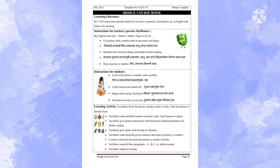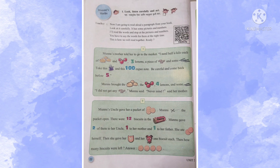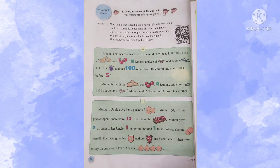In this topic, we are going to learn how to read aloud a paragraph from your book. Look at it carefully — it has some pictures and numbers. I shall read the words and stop at the pictures and numbers; you have to say the words for them at the right time. This is how we will read together. Ready? Ok.